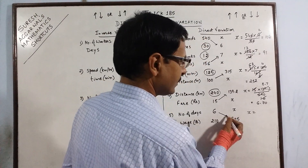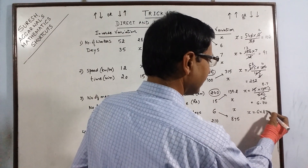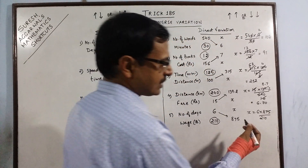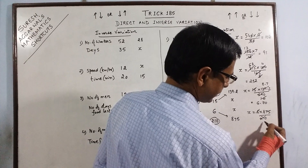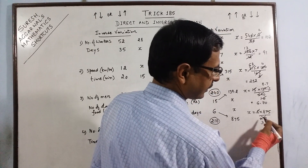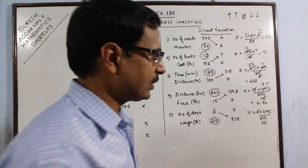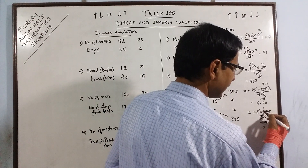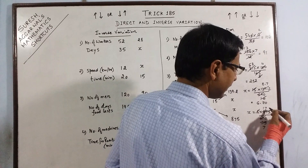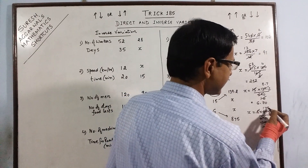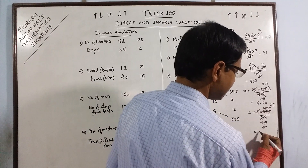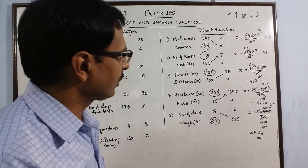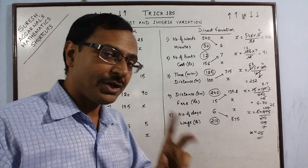To find the value of x: multiply 6 into 875 and divide by the third quantity 210. When you cancel, 6 divided by 210 reduces, and cancelling by 5 gives 7 and then 37. Then 5 and 7 cancel exactly 25 times, so the answer is 25. You can see that direct variation questions can all be solved in a matter of 3 to 4 seconds only.